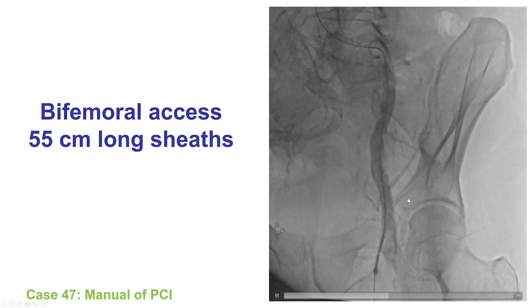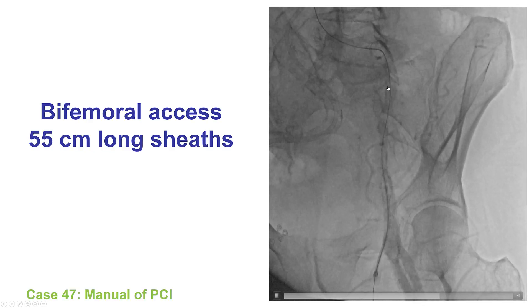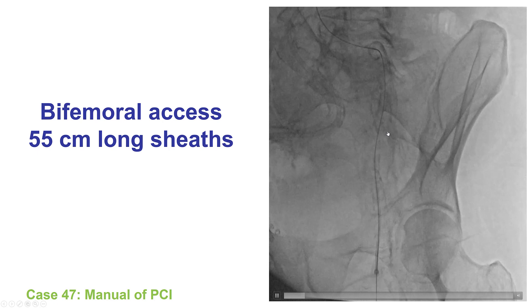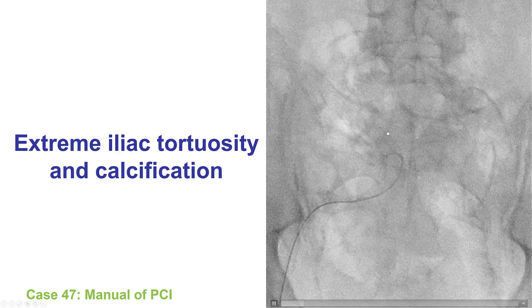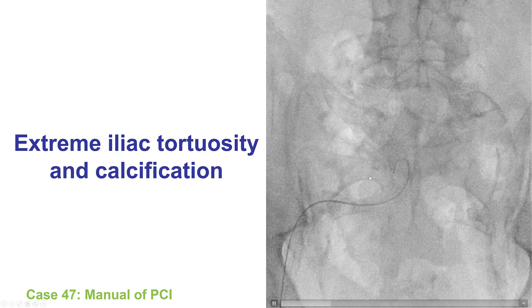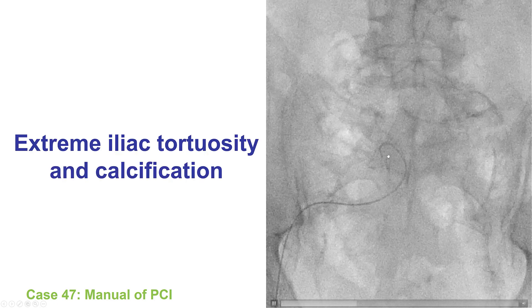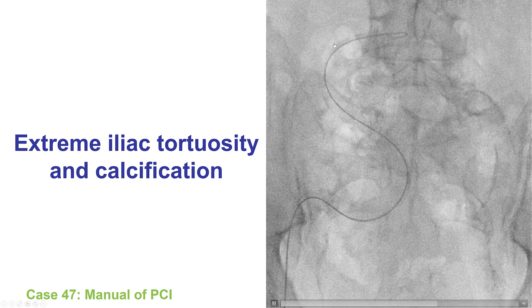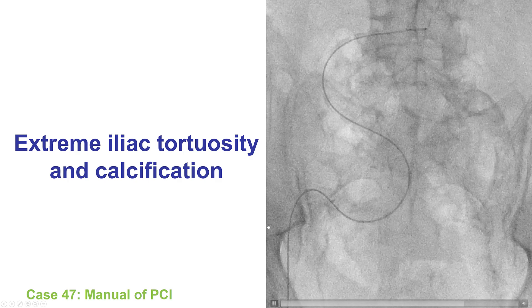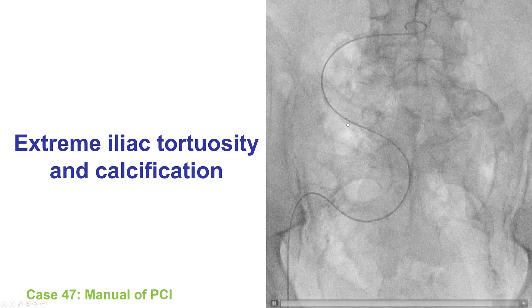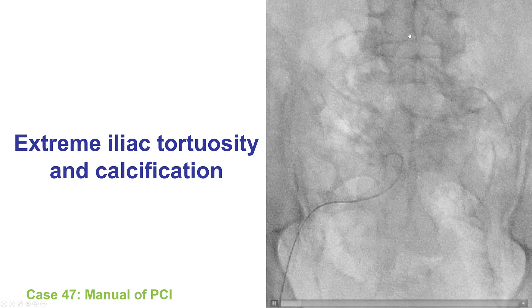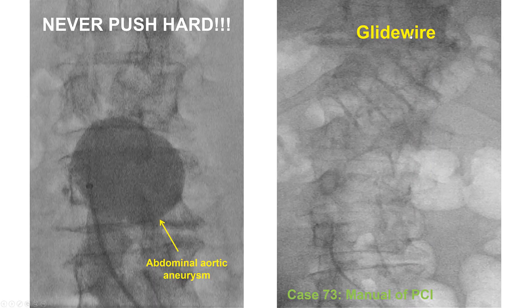This is another example of areas of tortuosity and calcification, and yet another example. The wire has difficulty advancing, but eventually it goes, and we can see the extreme iliac and aortic tortuosity.